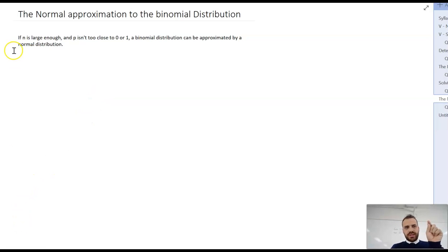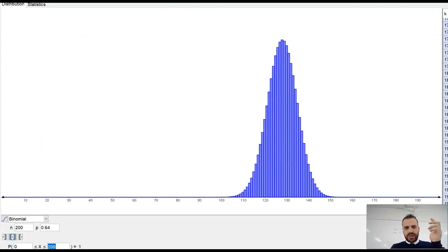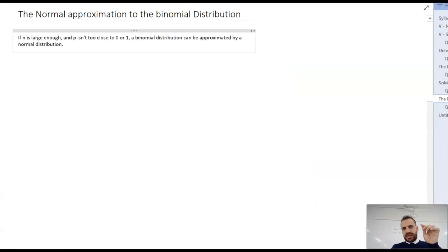So just two things here. If n is large enough, we moved our way up to 200 trials. That's a large n value. That's a lot of times to do a trial. Also, you can notice that our p-value is 0.64, which is the second part.